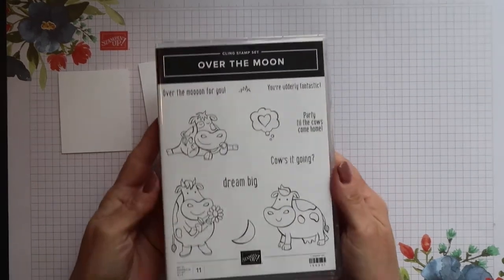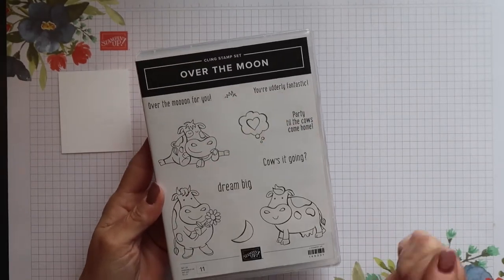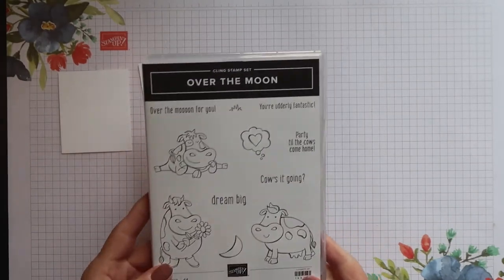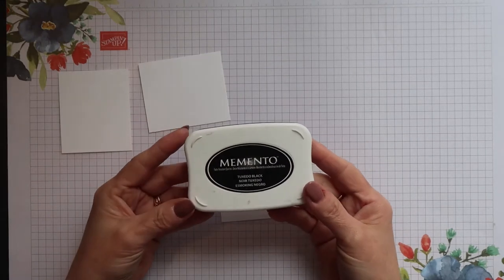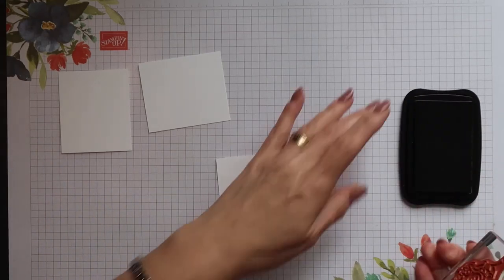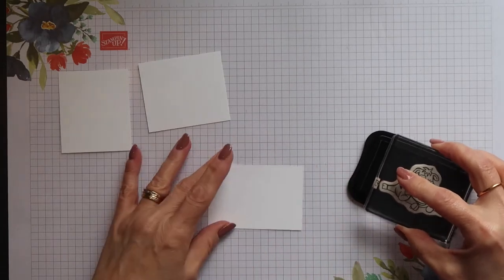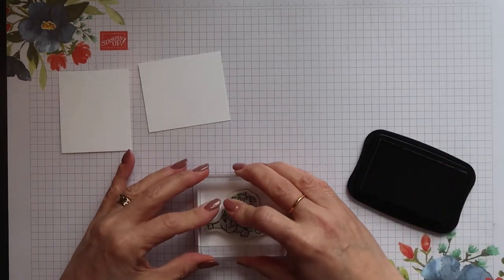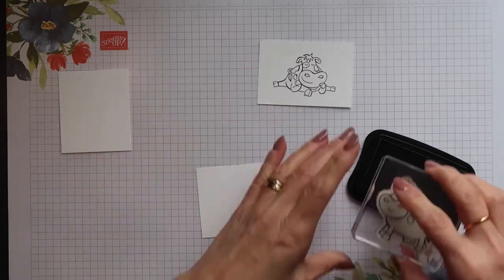Of course I'm using the Over the Moon stamp set again and these three cute cow images and also the grass image. I'm going to stamp on some of our normal weight Whisper White and I'm using Memento Tuxedo Black ink. So I'm just going to stamp each cow on its own piece of Whisper White.